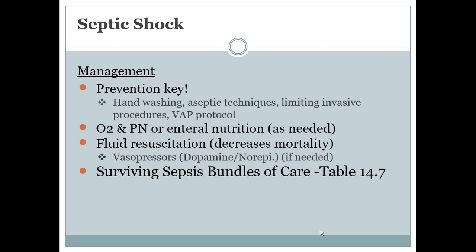There's a surviving sepsis bundle of care on table 14.7, page 278. It shows specific time frames: within three hours of onset, we want to measure lactate levels, obtain blood cultures prior to administering antibiotics, administer a broad-spectrum antibiotic, and administer IV fluids with a vasopressor if needed, especially if blood pressure is not responding to fluid resuscitation.